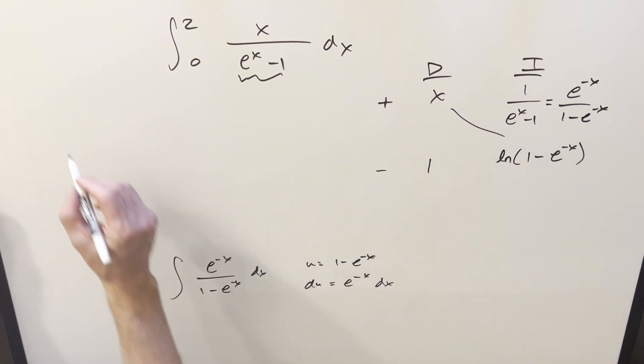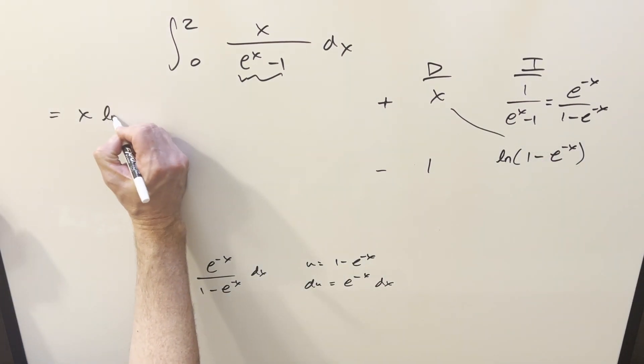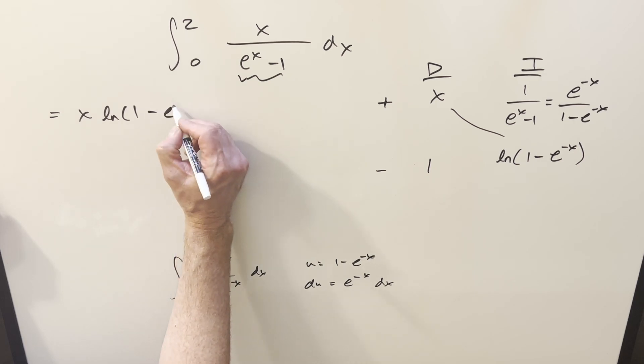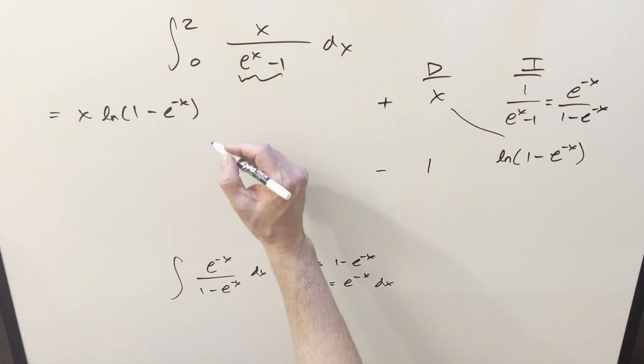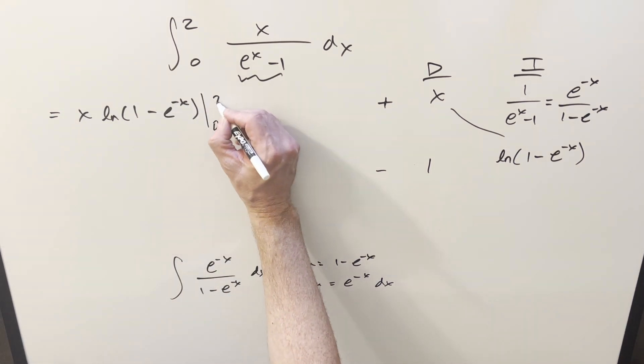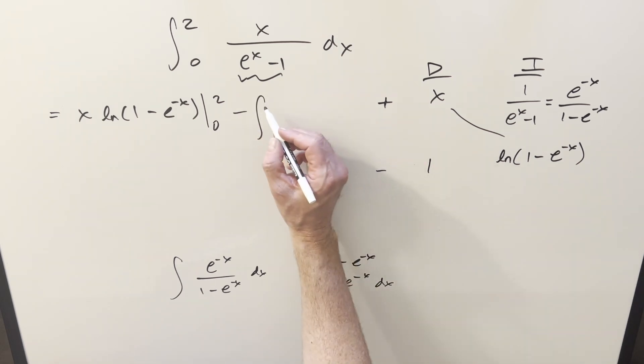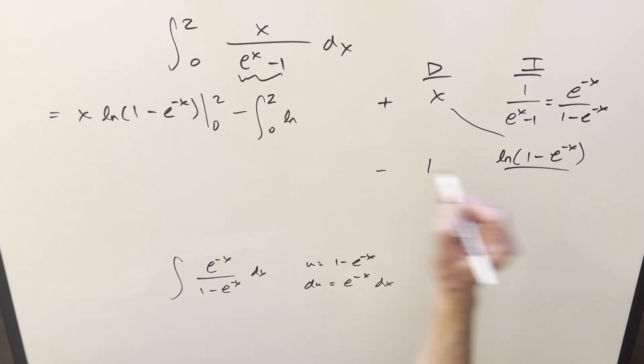So then we have part of our solution on the diagonal. Let's write that down. x natural log 1 minus e to the minus x. And we need to evaluate that from 0 to 2. This row is going to be an integral. It's going to be the integral from 0 to 2 of just this piece right here.